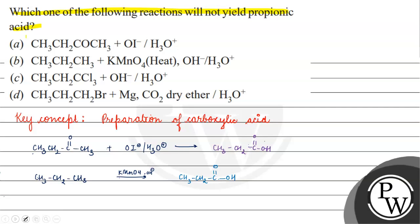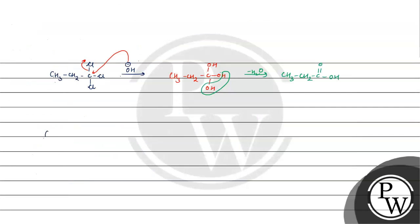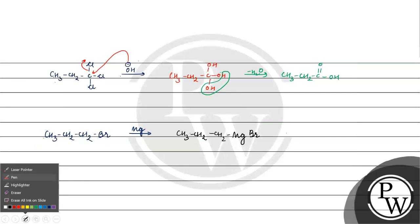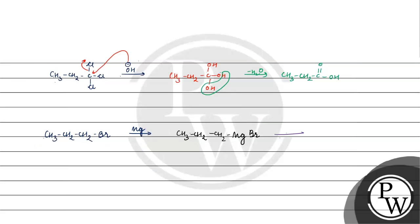Next, what will we do? CH3 CH2 CH2 Br. What will this reaction be? Mg. So, what will we get? It will be Grignard reagent. What will we do? Reaction with CO2. What will the Grignard reagent react with? CO2.